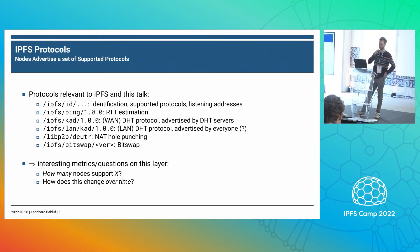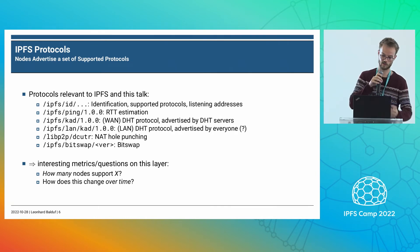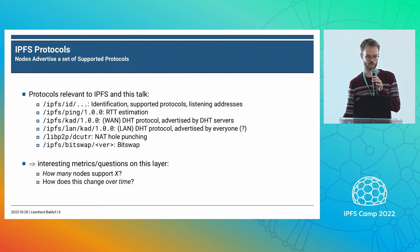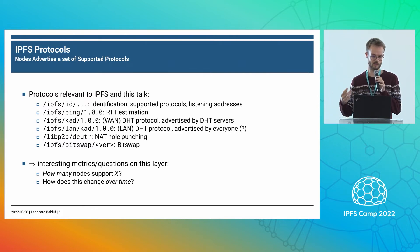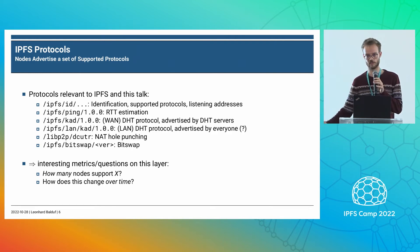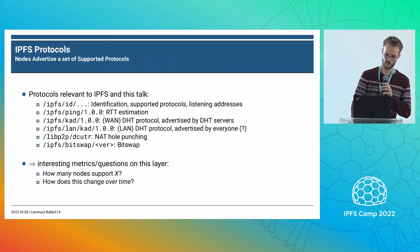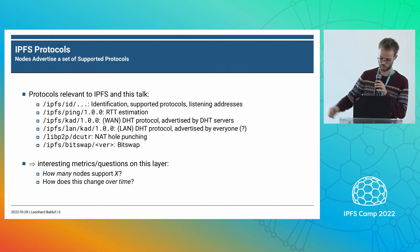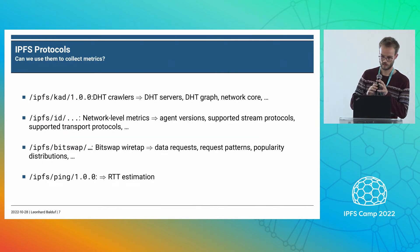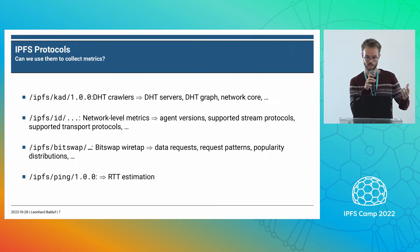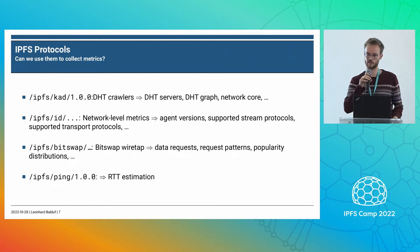On this layer already — using the ID protocol — we can ask a bunch of interesting questions. For example, how many nodes support some protocol? I know the new hole punching approach is being rolled out, and an interesting question would be how many nodes support this at the moment, and how does this change over time? We can find new implementations, new applications, and use these protocols to extract metrics that are interesting to us.